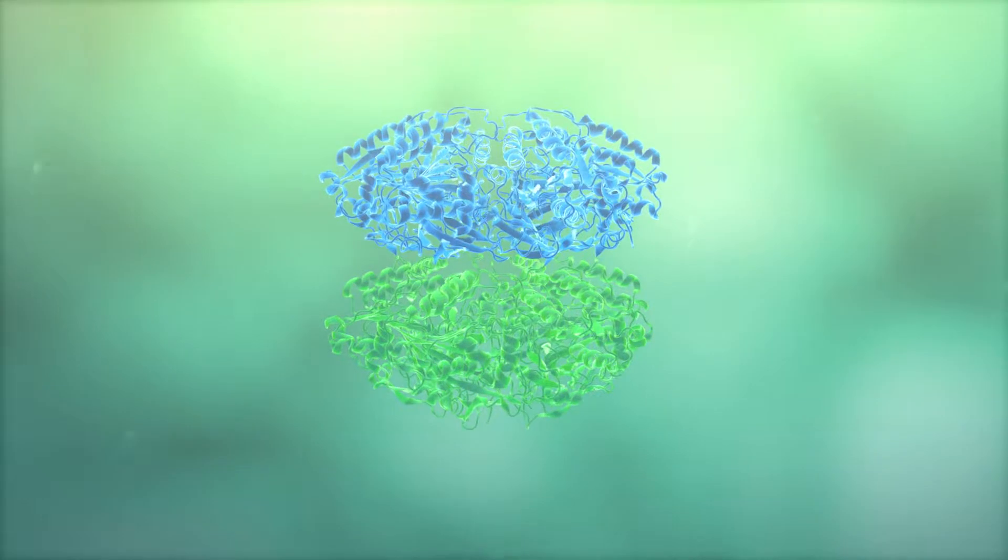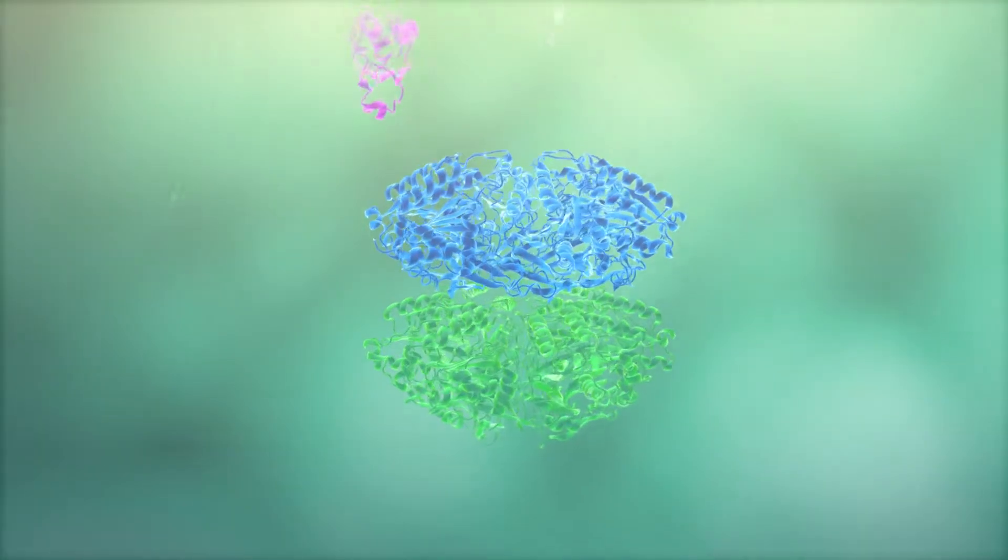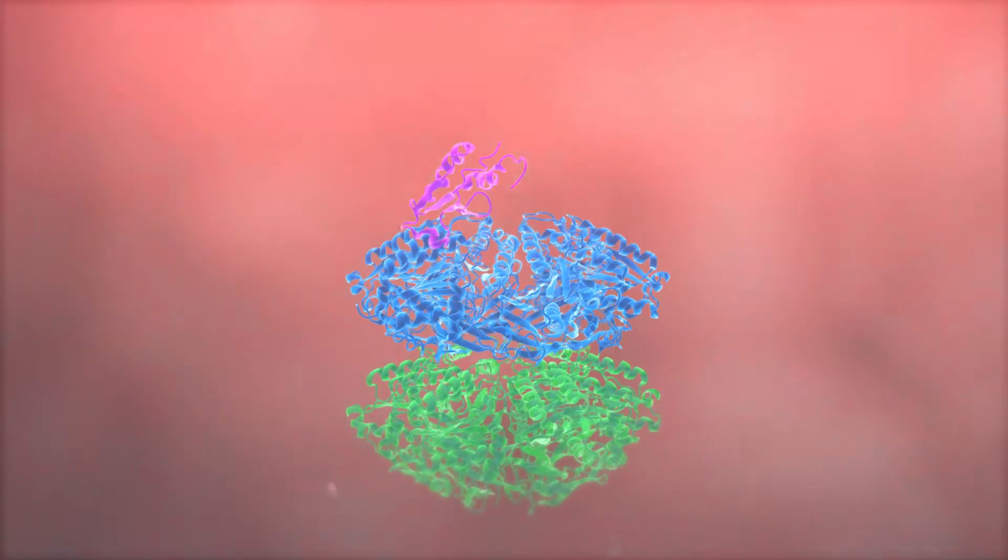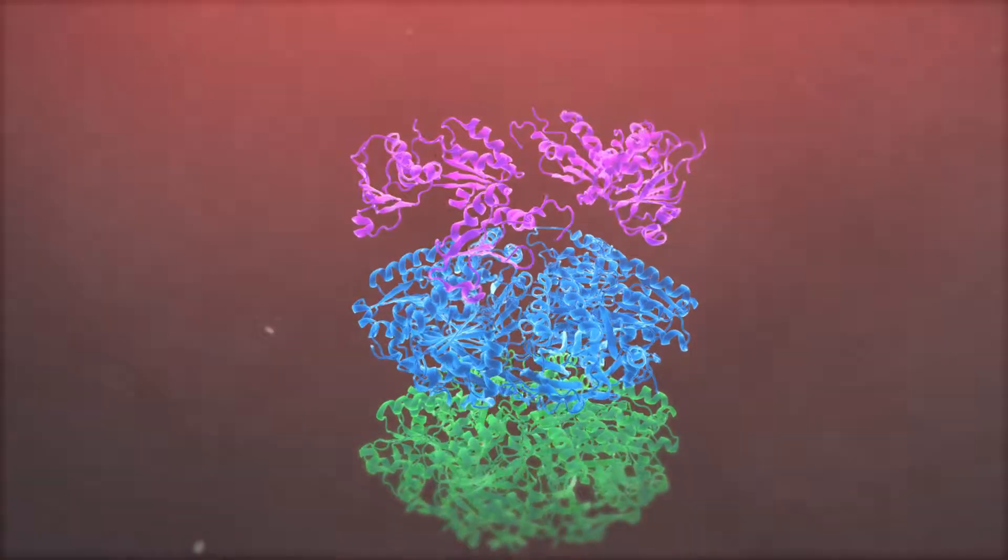During the day, one of the three proteins called CHI-C changes its structure. The second protein, CHI-B, then binds to CHI-C.